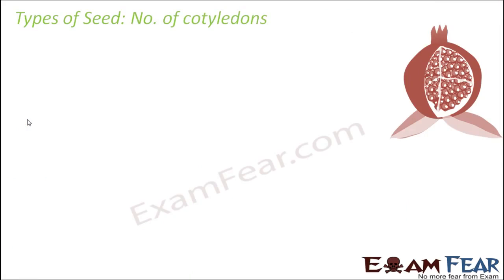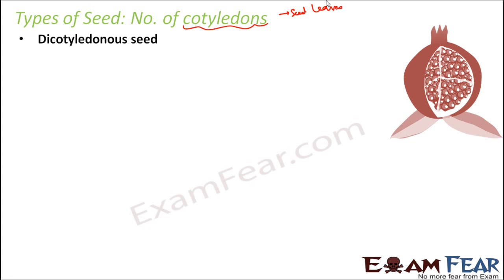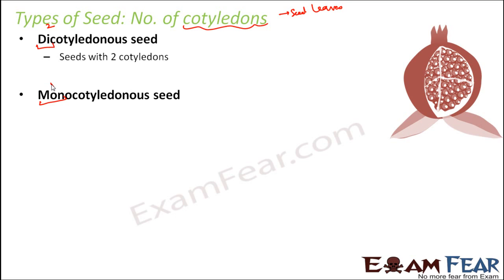Now let us look at the types of seed based on the number of cotyledons. Cotyledons are nothing but the seed leaves. They are of two types: dicotyledonous seed and monocotyledonous seed. 'Di' means two and 'mono' means one, so a seed with two cotyledons is a dicotyledonous seed, whereas a seed with one cotyledon is a monocotyledonous seed.